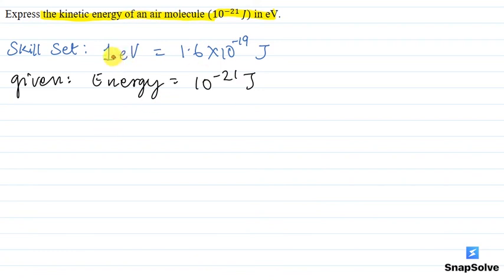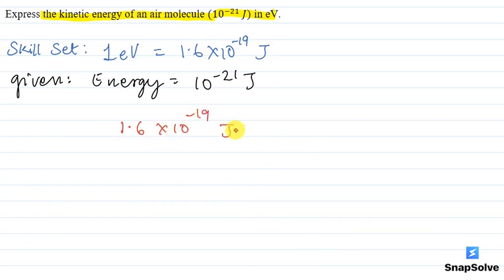Here we have the relation between electron volt and joules: 1 electron volt is equal to 1.6 into 10 raised to the power minus 19 joules. So, 1.6 into 10 raised to the power minus 19 joules is equal to 1 electron volt.